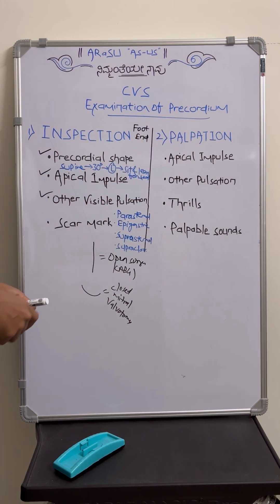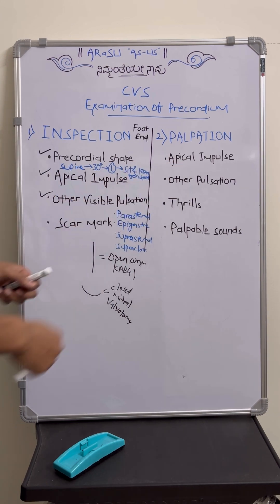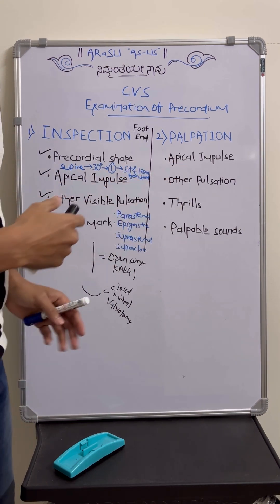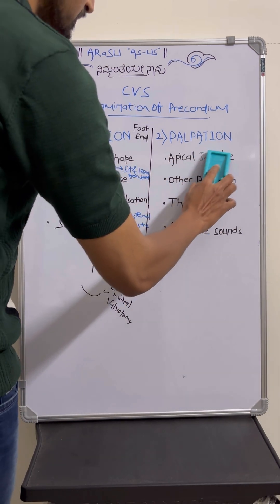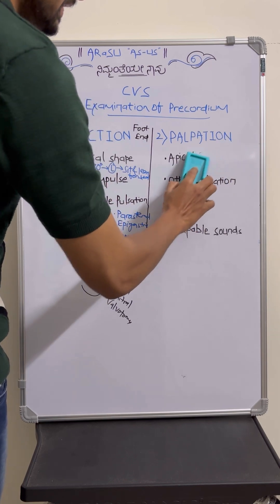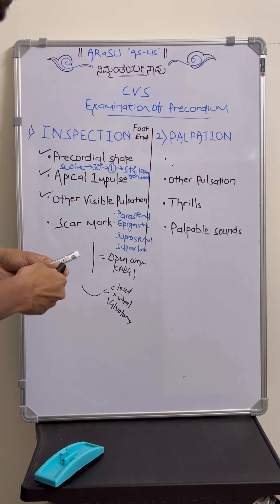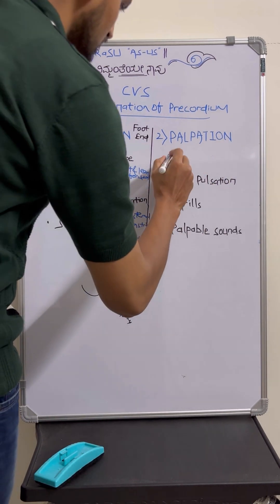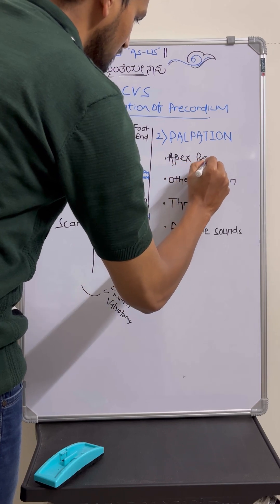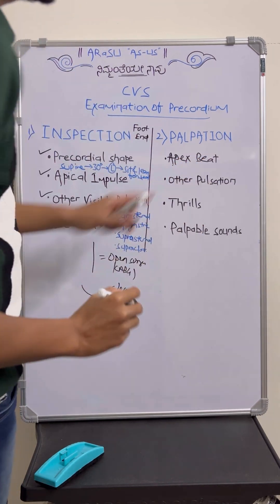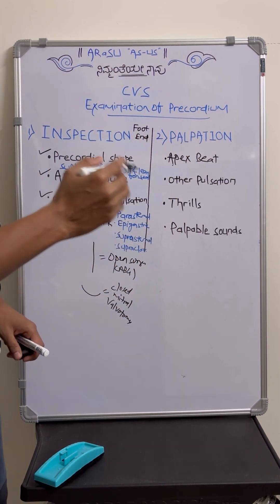Coming to palpation — the same two things are there. One is again apical impulse, but here we consider it as apex beat. The location and the nature of the apex beat have to be described.